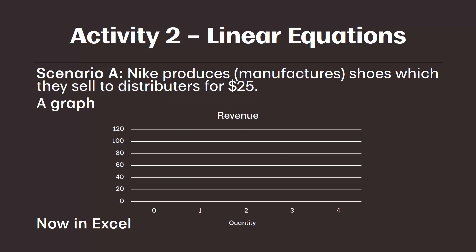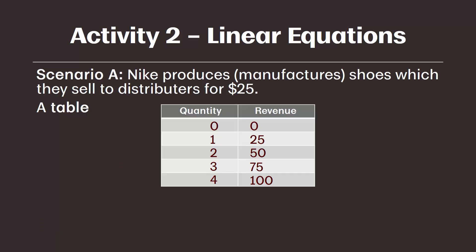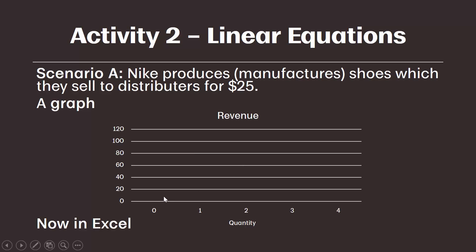Finally, we can represent revenue with a graph. To graph revenue, we would want to find the intersection of each data point from our table. We can see that revenue is zero when quantity is zero, so we plot that point first. On our graph, the y-axis represents revenue — so at zero quantity, revenue is zero. Our next point: at one unit, we had revenue of 25, which we'll plot right there.